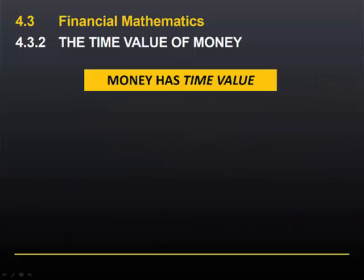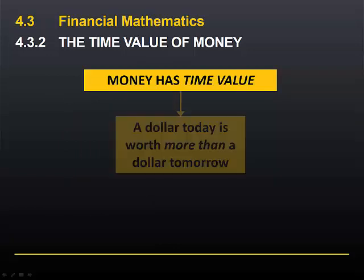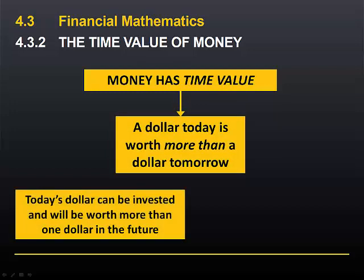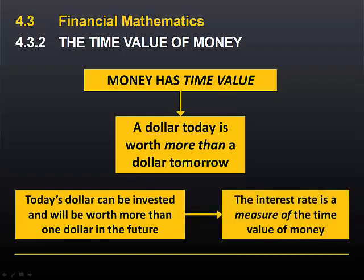The reason for this is that money has time value. This means that a dollar today is worth more than a dollar tomorrow. The reason for this is that today's dollar can be invested and will be worth more than one dollar in the future. We can therefore say that the interest rate is a measure of the time value of money. The higher the interest rate, the greater the time value of money and the greater the difference between the value of a dollar today and the value of a dollar at some point in the future.